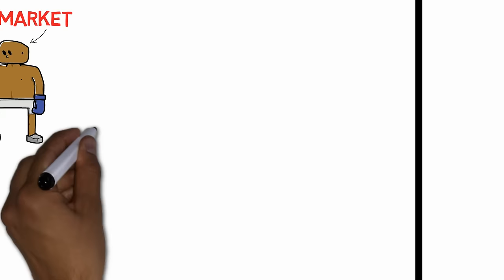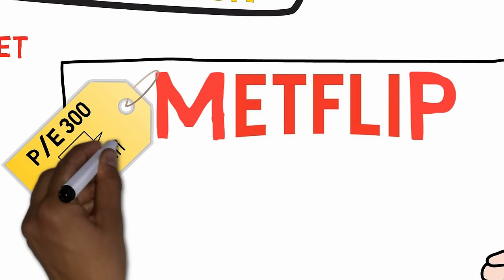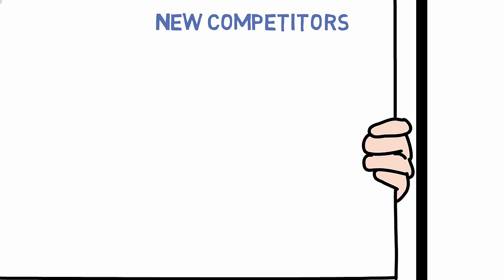Pretend there's a company called Metflip, which is selling at a PE ratio of 300. In other words, the market is expressing that Metflip is a surefire bet. You are not convinced though, as lately, the company has experienced an increased level of competition.